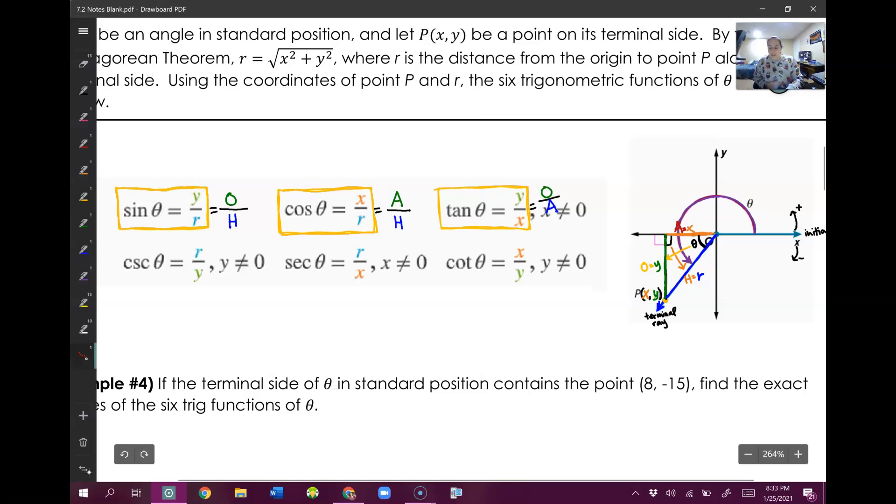Now, just like we had before, cosecant is paired with sine, and you'll notice it's just sine flipped. So instead of Y over R, it's R over Y. Secant is paired with cosine, so instead of X over R, it's R over X. And cotangent is paired with tangent, so instead of Y over X, it's X over Y.